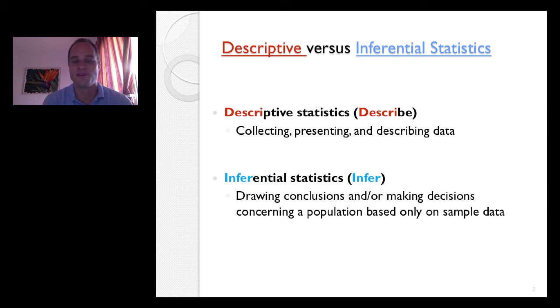Inferential statistics is about drawing conclusions or making decisions concerning a population based only on sample data. If you think about any sort of general election in the United States when we're moving up to a presidential election, let's say, every four years in November, almost every other day up until election day there's a poll conducted by Gallup, CNN, a host of credible polling agencies will do this.